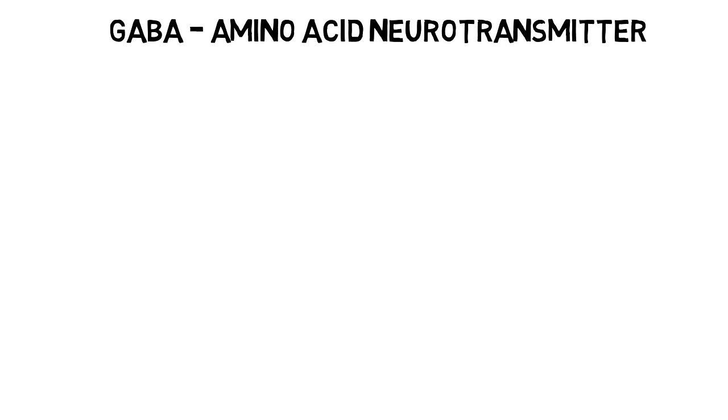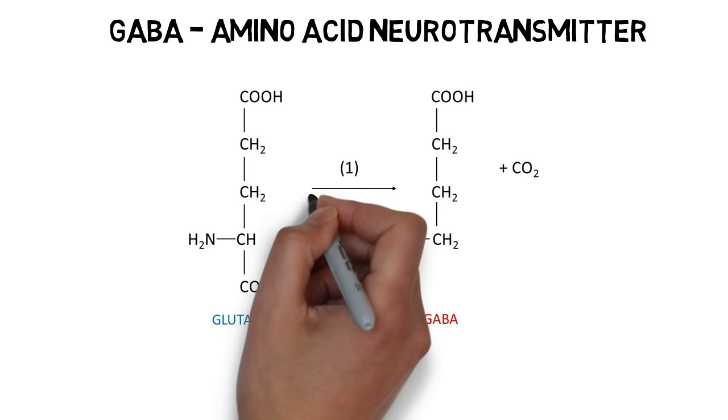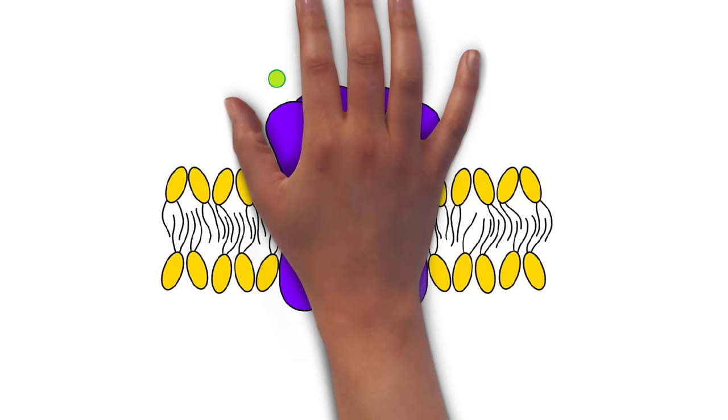Although GABA's primary functions are as a neurotransmitter, it has the structure of an amino acid and thus is referred to as an amino acid neurotransmitter. It is synthesized from another amino acid neurotransmitter, glutamate, in a reaction catalyzed by the enzyme glutamic acid decarboxylase.